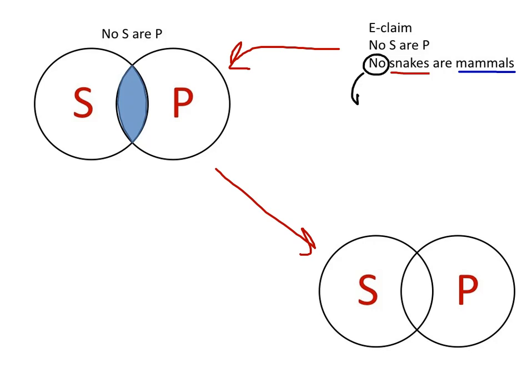So whereas categorical logic looks at the inclusion or exclusion of claims, this is a claim that excludes the members of one category from another. And so this region here, in the middle, the region that includes both of them, is going to be the region that doesn't apply. So this is the region that's going to get shaded out completely.